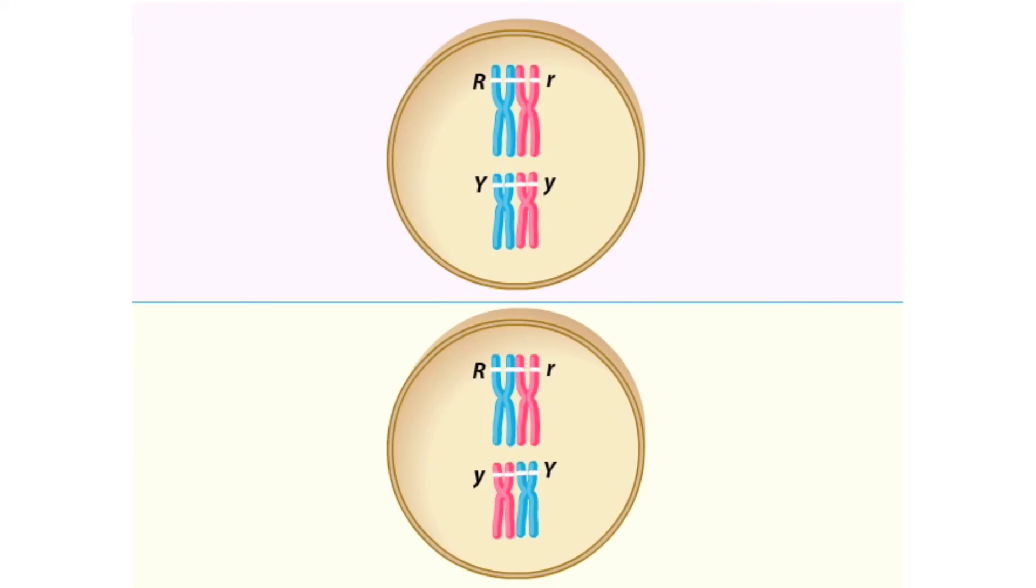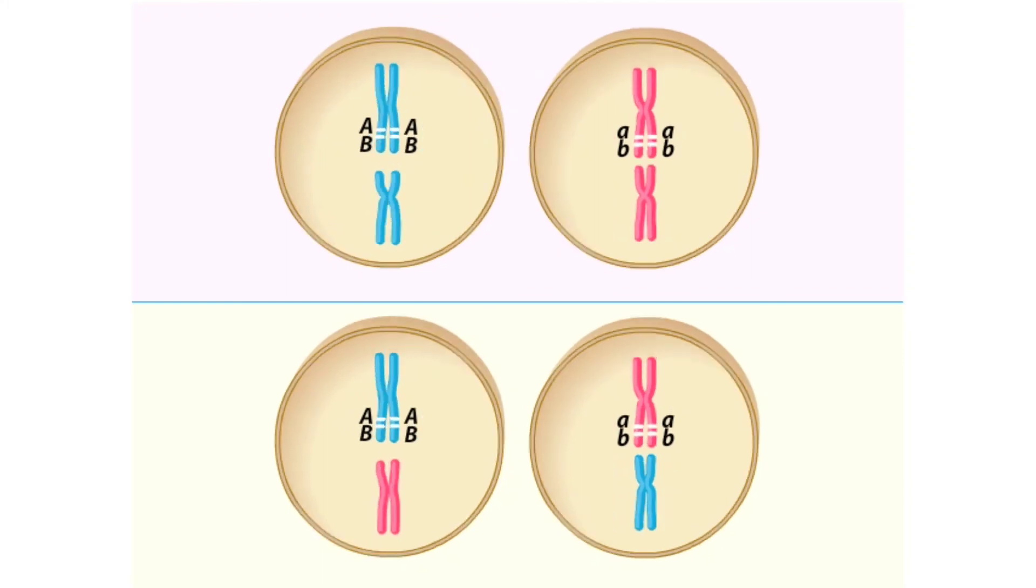Mendel's law of independent assortment holds true for the alleles of genes located on different chromosomes, as in this example, but may not apply to a pair of genes located relatively close to each other on the same chromosome. Two genes very close together on a single chromosome typically travel together, rather than independently.